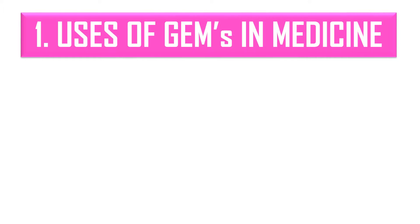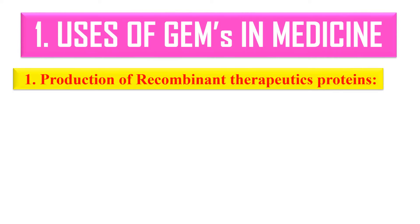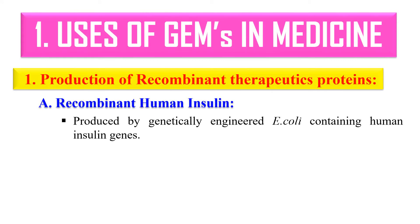In the case of medicine, GEMS may be used for the production of recombinant therapeutic proteins. For example, recombinant insulin and recombinant human growth hormone. Recombinant human insulin was produced in 1978 by Herbert Boyer. It is the first recombinant therapeutic protein that was approved by the FDA in 1982.